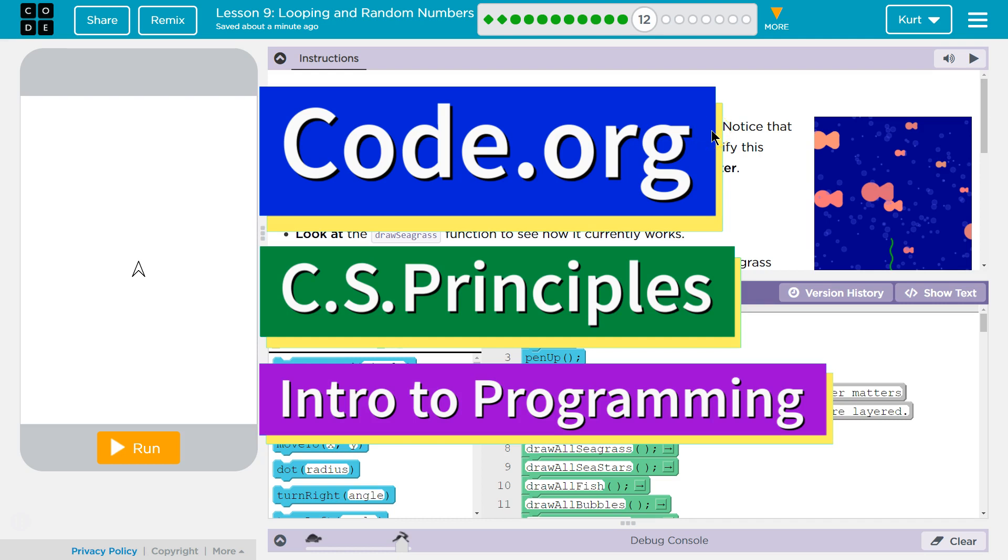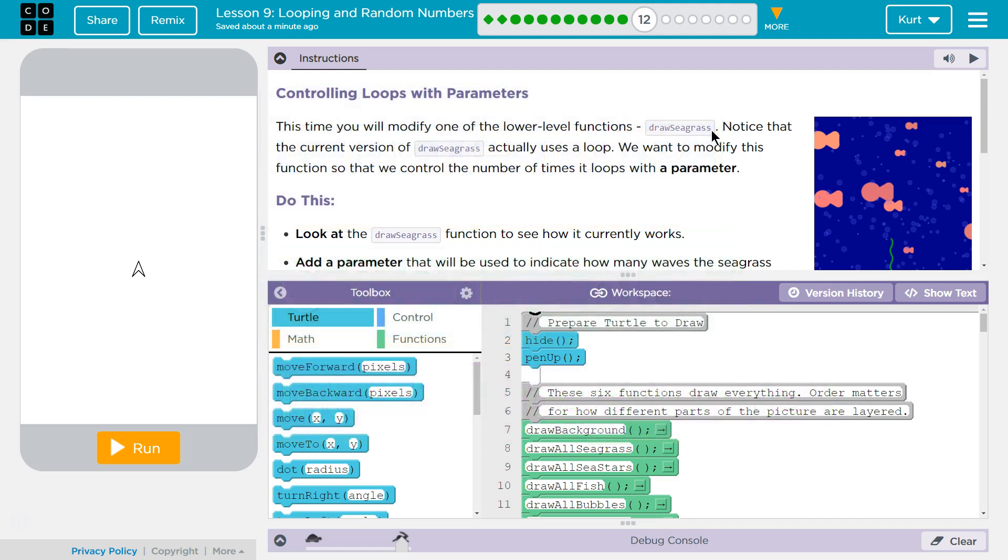This is Code.org. I'm currently working on their CS Principles course. I'm on Unit 3, Intro to Programming, Lesson 9, Looping and Random Numbers, Part 12.